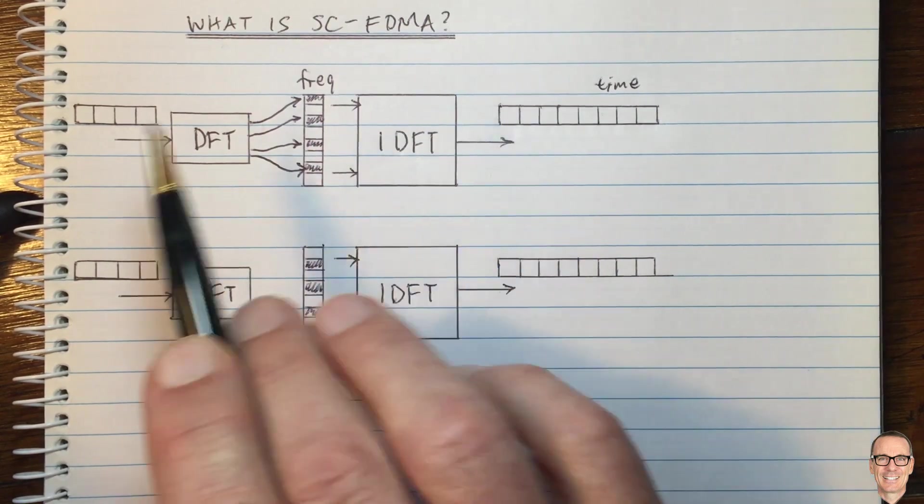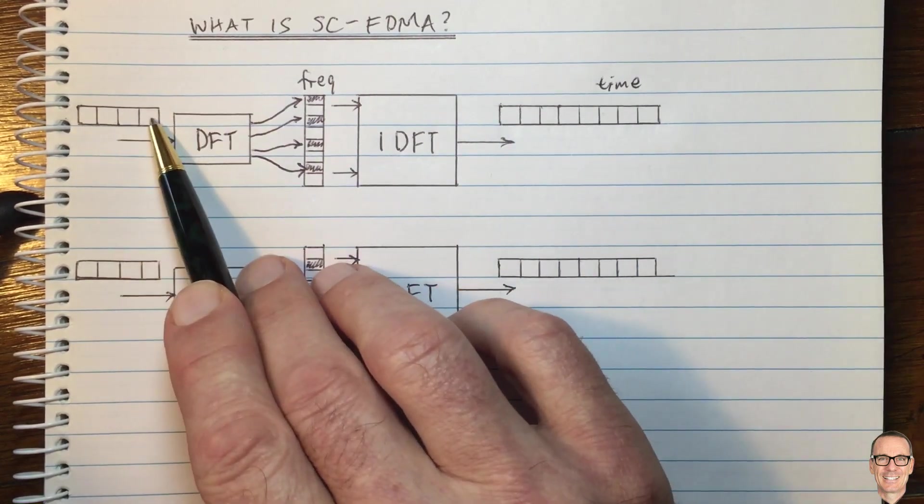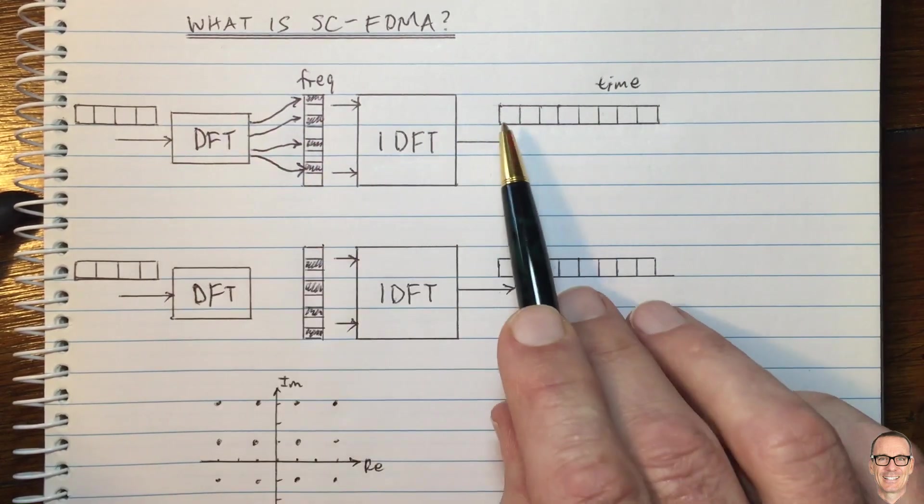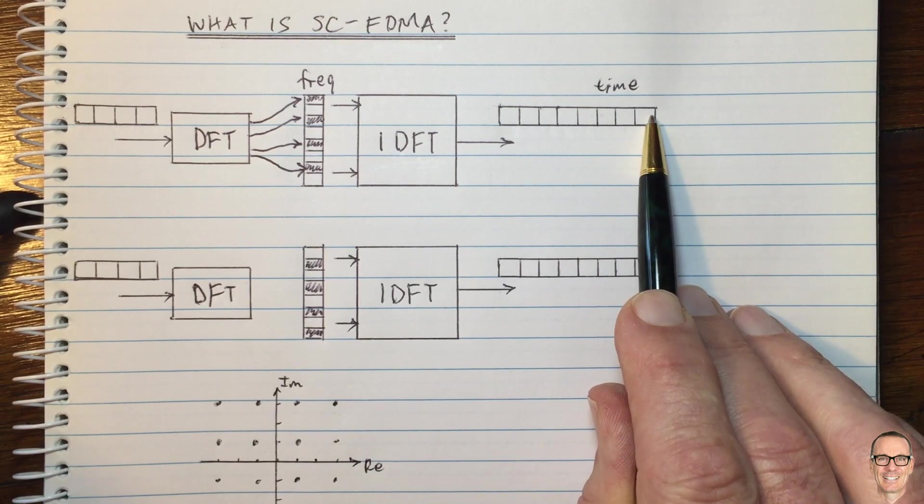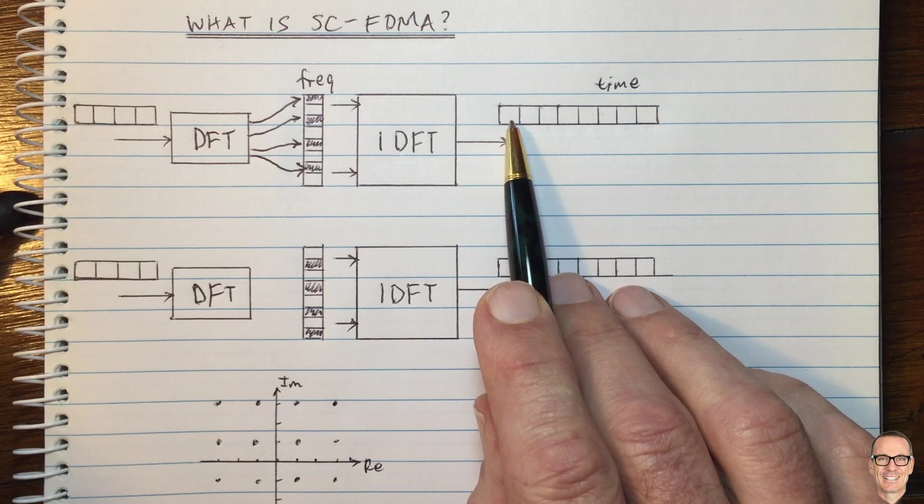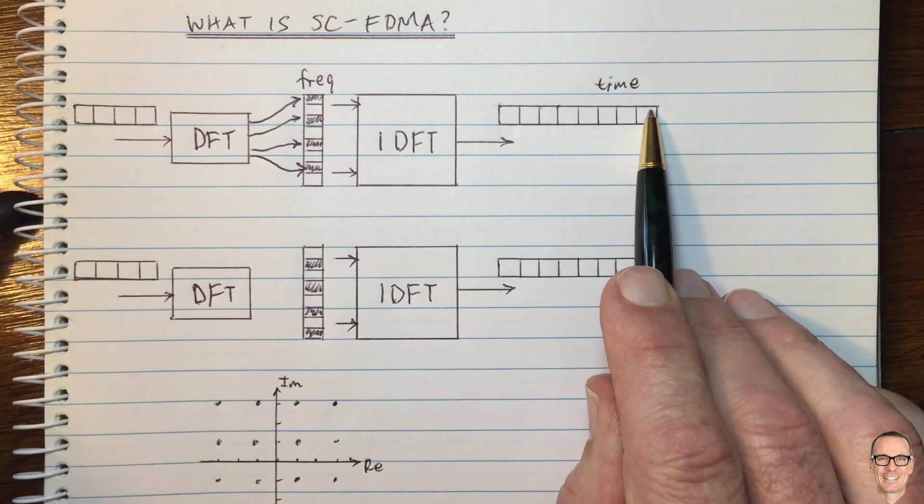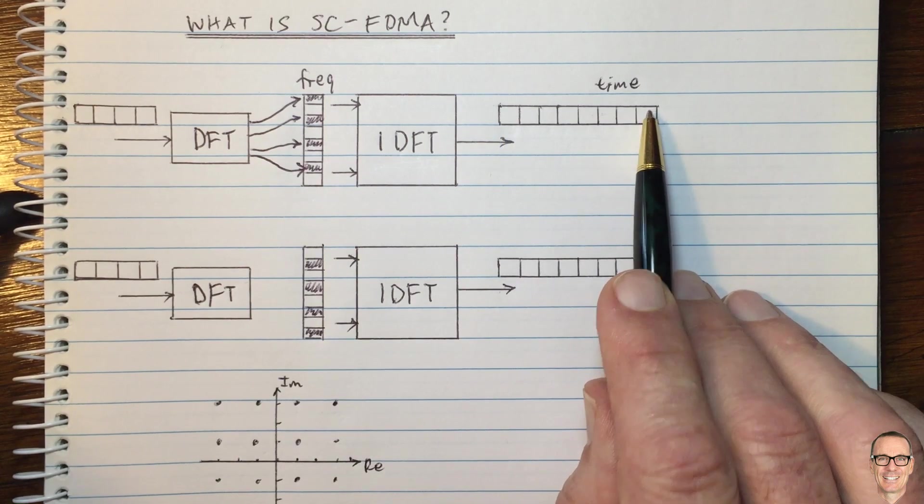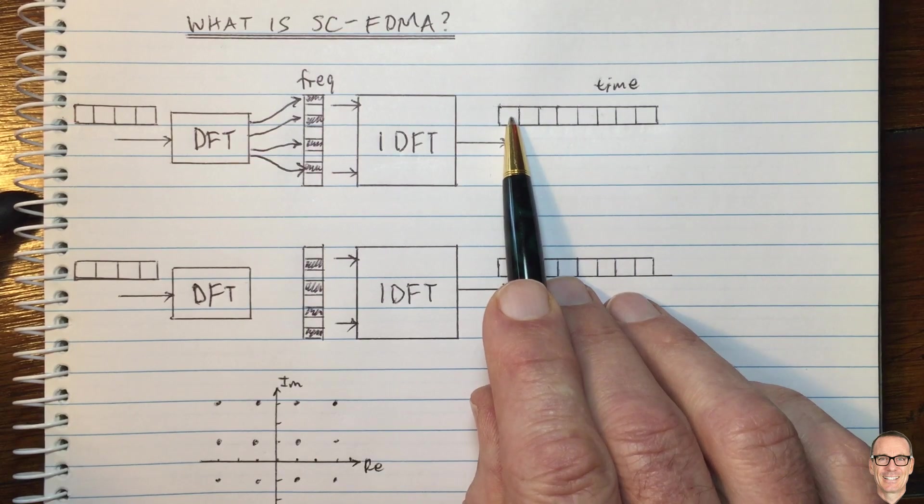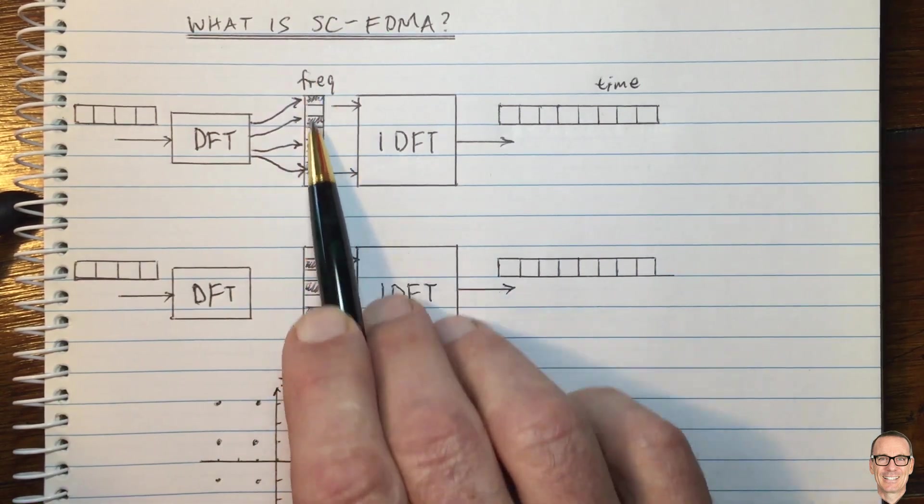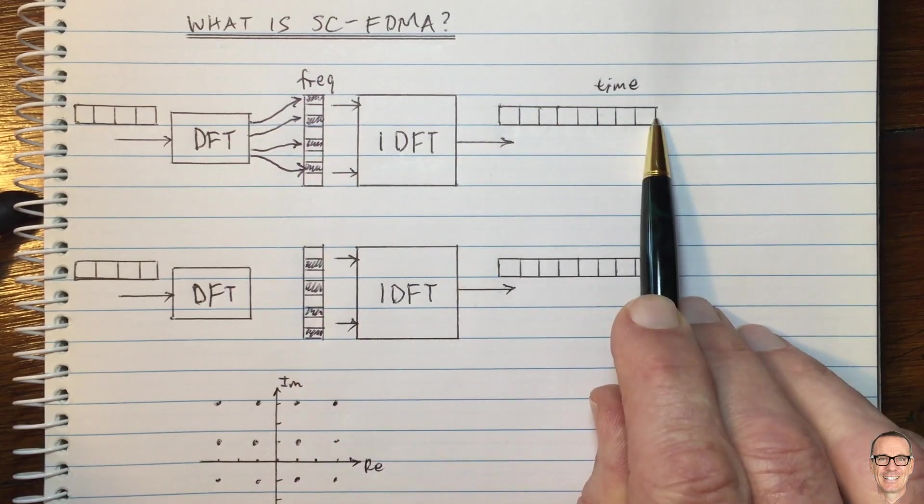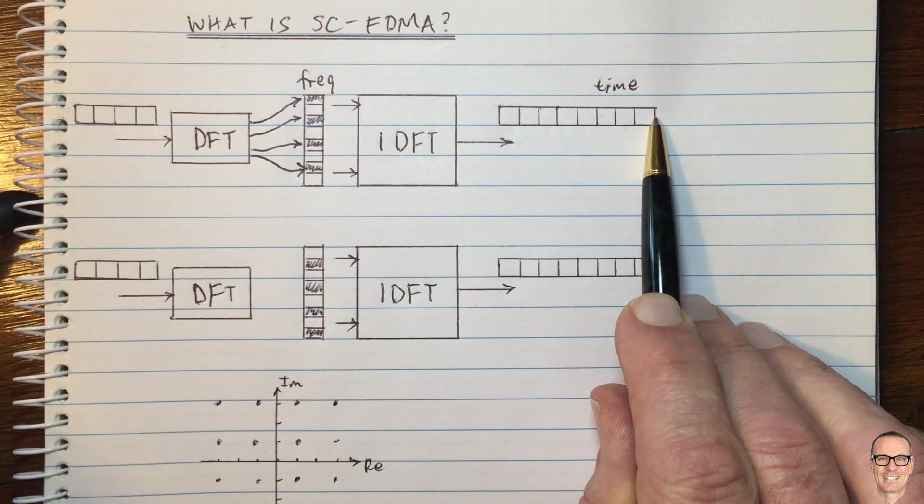So why would it imply that with this bounded peak to average ratio that this would also have a bounded peak to average ratio? Well, look out for a video coming up on the channel which goes through this in mathematical detail, but intuitively we can resort to some fundamental Fourier transform properties. And that is that if you expand in one domain, then you contract in the other domain and that that is all that you're doing.